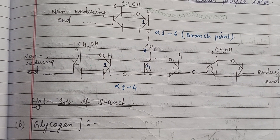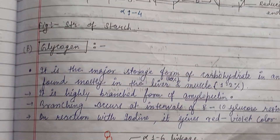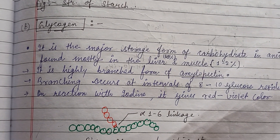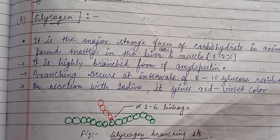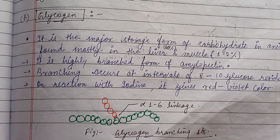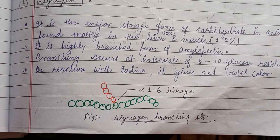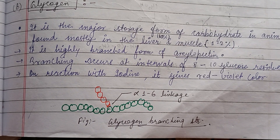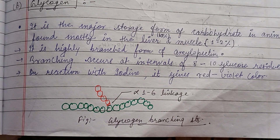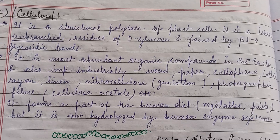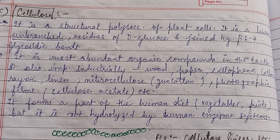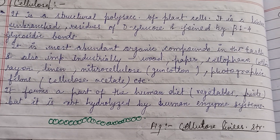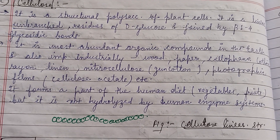Glycogen is the storage form of carbohydrates in animals and is mostly found in liver and muscle cells. It has a highly branched structure and is formed similarly to amylopectin.